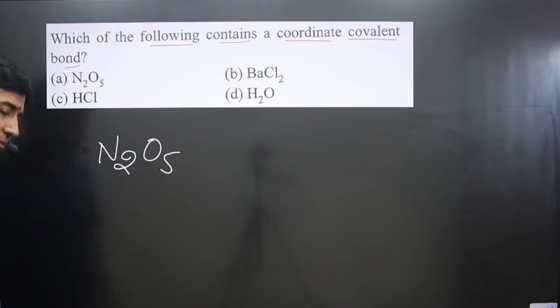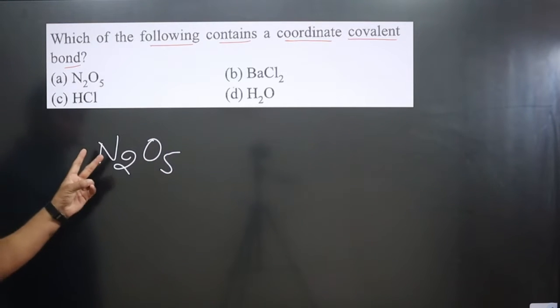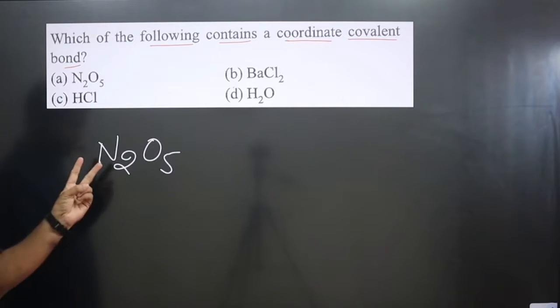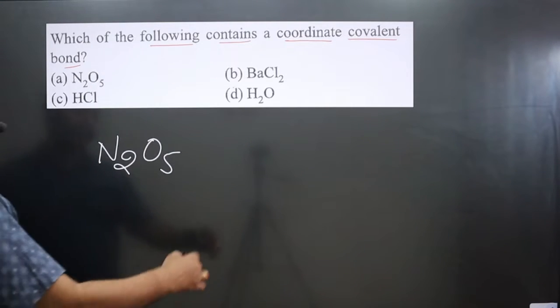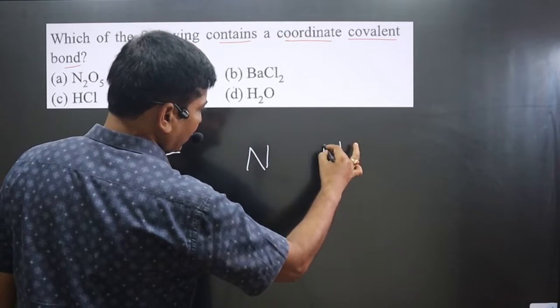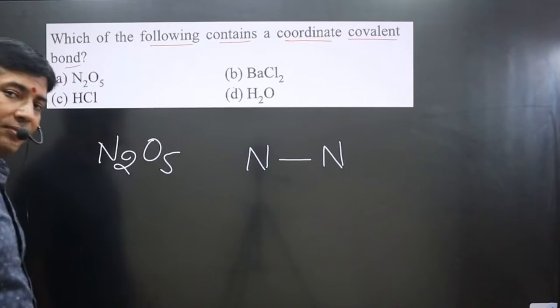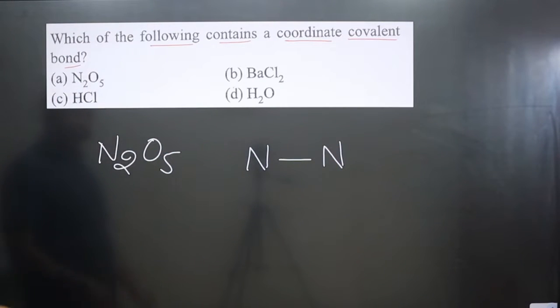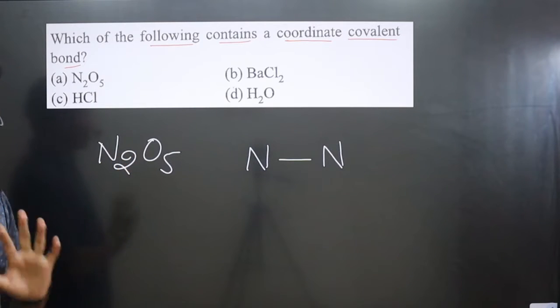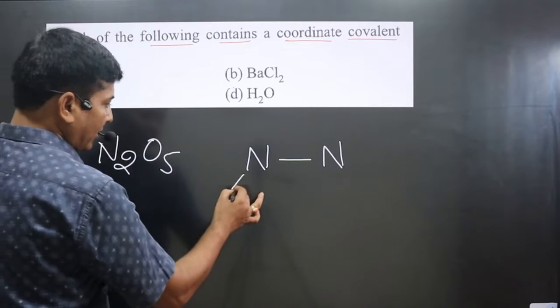N2O5 has two nitrogens. Nitrogen is the central element. We can have nitrogen-nitrogen linkage. Pay attention carefully. Now we can equally distribute the oxygen. One oxygen is attached to this nitrogen by a double bond.